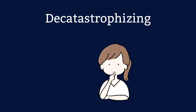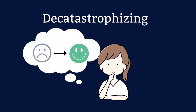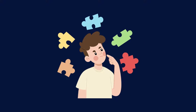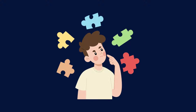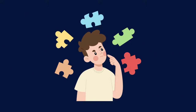De-catastrophising. This is a technique that will help clients sit down, relax, and think about their exaggerated thoughts and any negative outcomes they're expecting, and then reconfigure how they think by helping them consider more rational ways to look at a problem and possible positive outcomes.